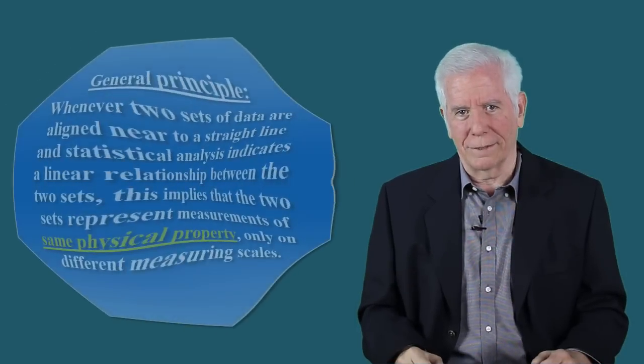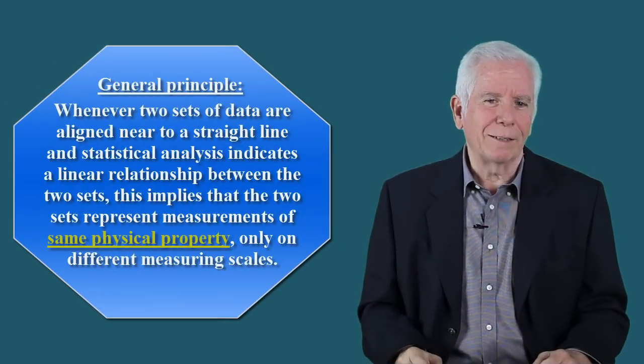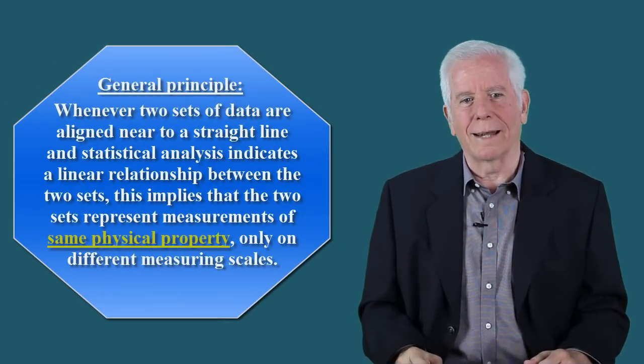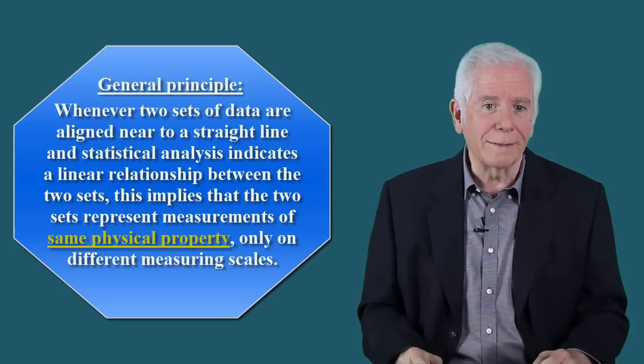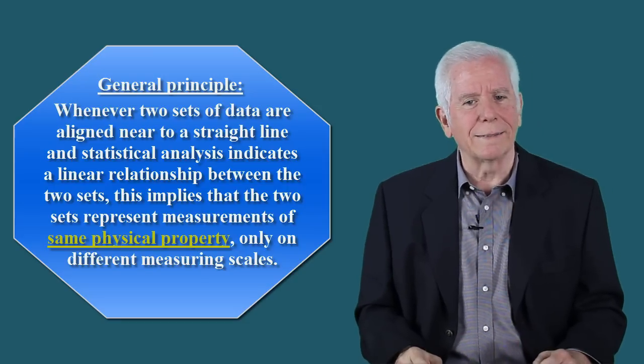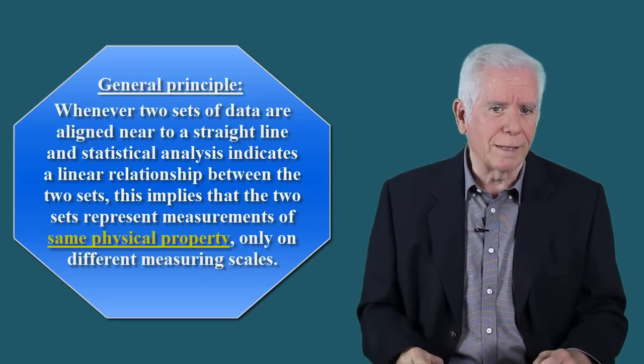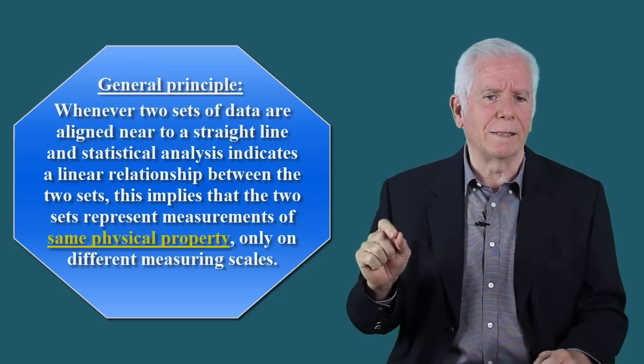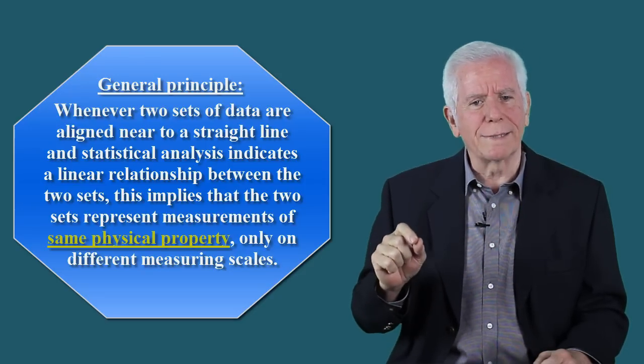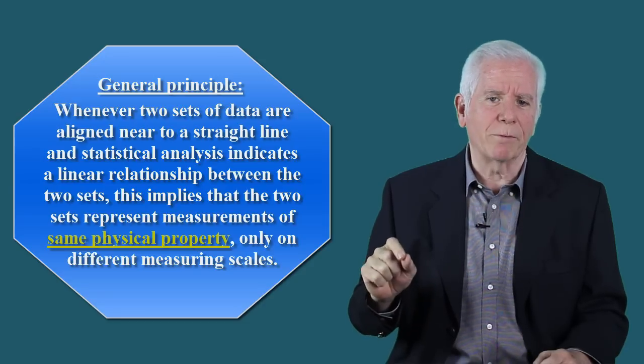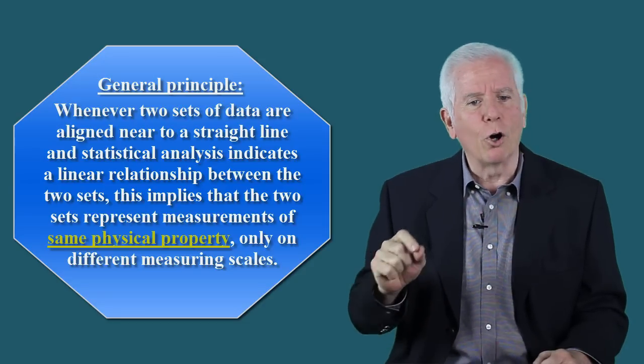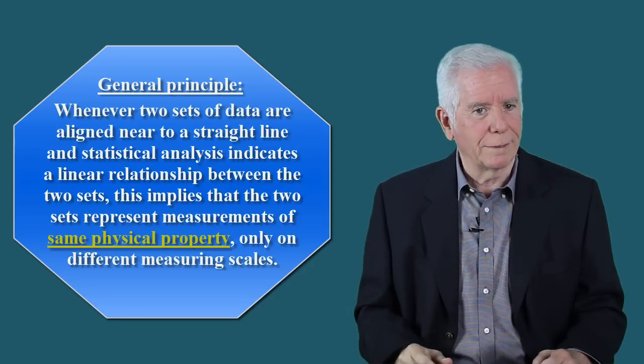Let us generalize. Whenever two sets of data are aligned near to a straight line, and statistical analysis indicates a linear relationship between the two sets, this implies that the two sets represent measurement of same physical property, only on different measuring scales.